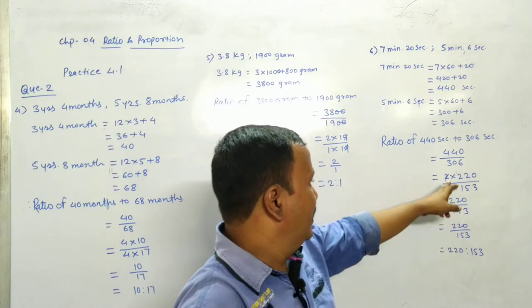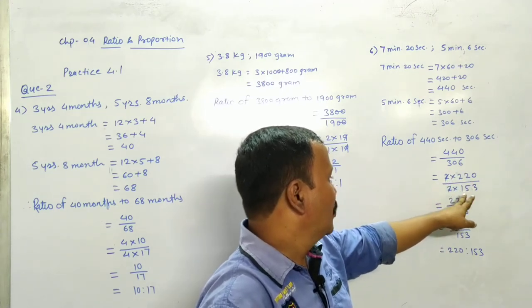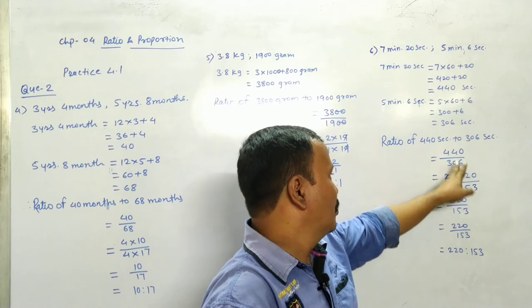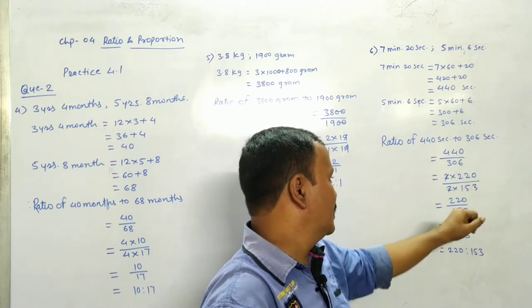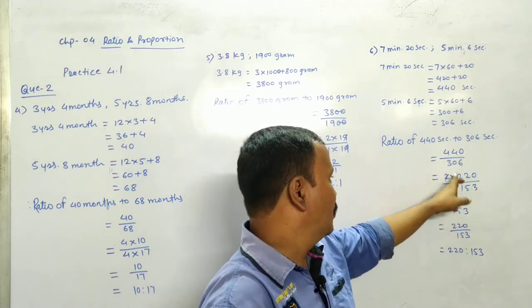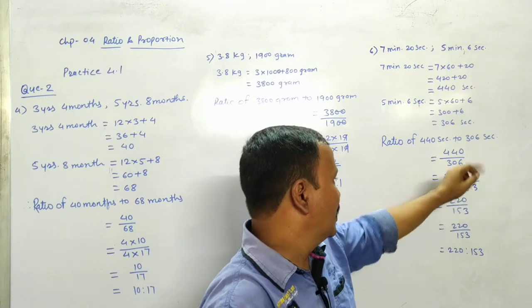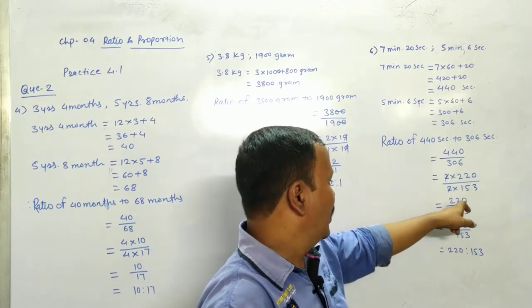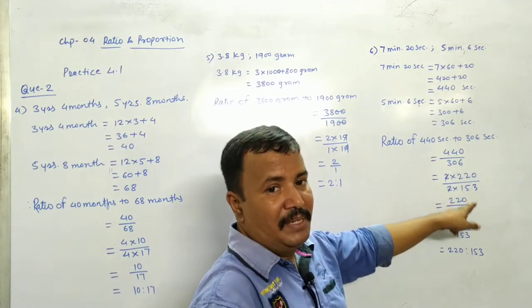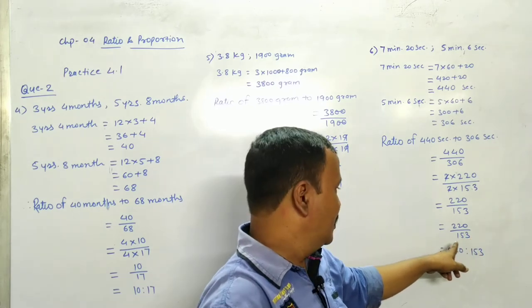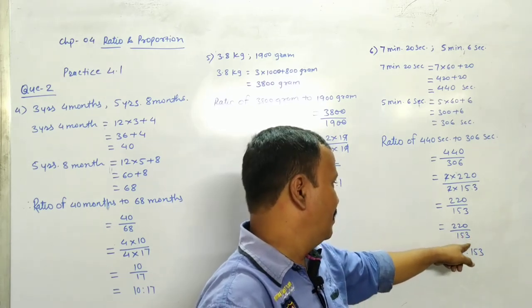Ratio of 440 seconds to 306 seconds. So, 440 divided by 306 is equal to 2 into 220, 2 into 153. 2 cancel. 220 divided by 153. Ab isko simplify nahi kar sakte.